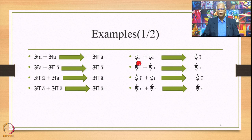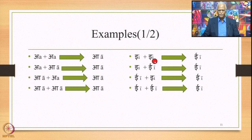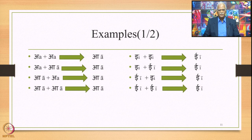In the case of E (short i): short E plus short E — they are Savarana, so 6.1.101 applies and the output is long E. In all four possibilities — E+E, E+long E, long E+E, long E+long E — the output is always long E. This is the Savarana Deerghaha Sandhi.